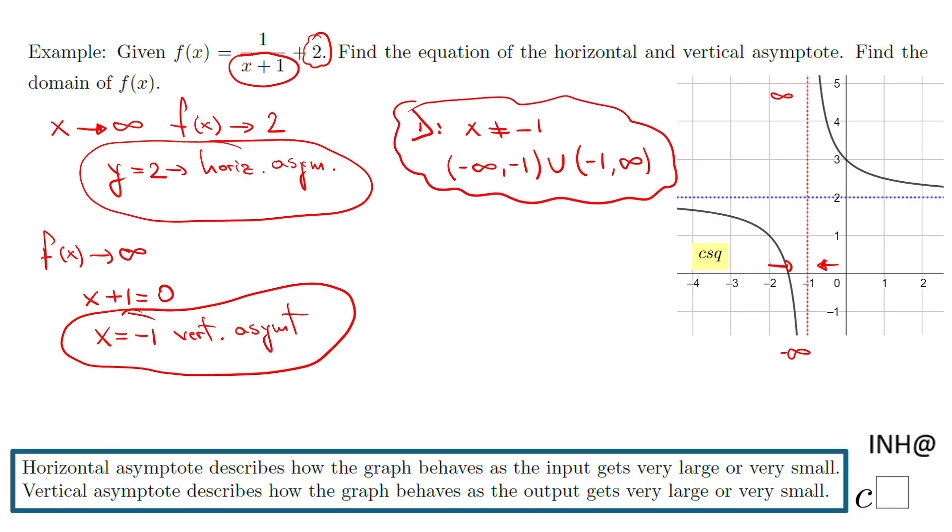We are not looking for the range in this problem, but just in case you need it, the range—in this moment you have the picture but also you have what we call this horizontal asymptote. The domain is any number but two. So these two asymptotes help you also to find the domain and the range.